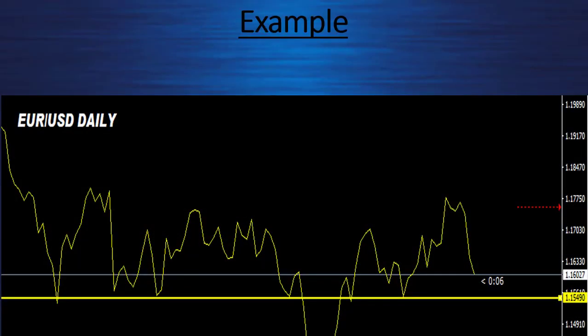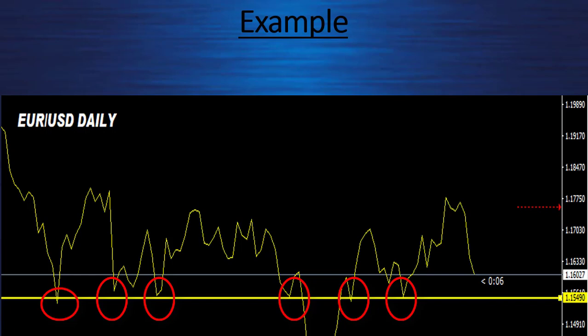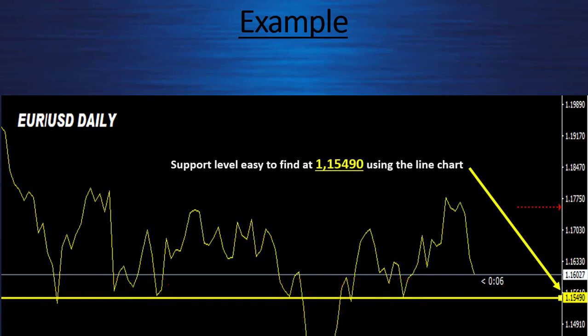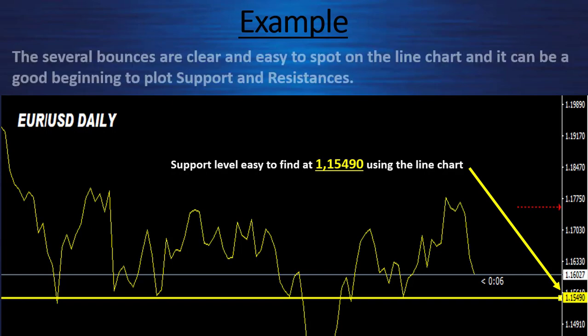Here is our example for EURUSD on a daily chart. We can see one bounce, two bounces, three bounces, four, five, six bounces at my yellow line. So this line is our support and this support level is easy to find at 1.15490. The several bounces are clear and easy to spot on the line chart, and it can be a good beginning to plot support and resistance if you are just starting to learn trading.